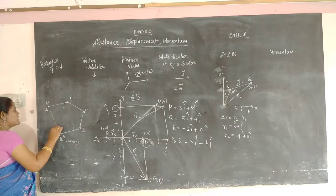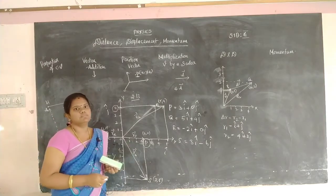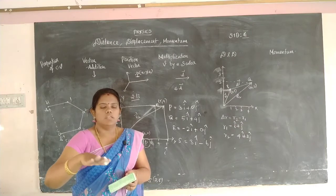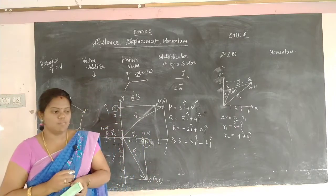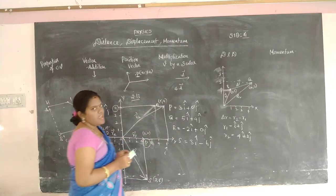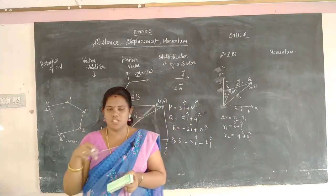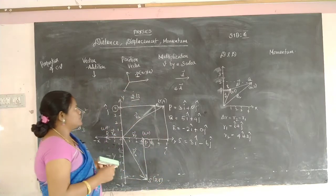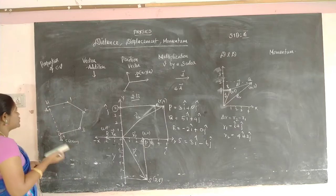Distance is nothing but the actual path length travelled by a particle. Displacement is nothing but the length between two positions — just the straight-line distance from A to B. You may travel through various paths for distance, but displacement just denotes the direct difference between start and end position.